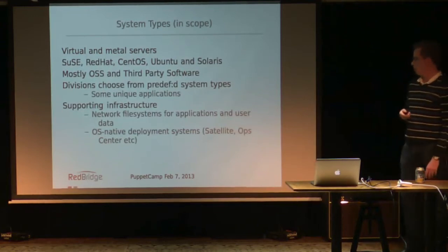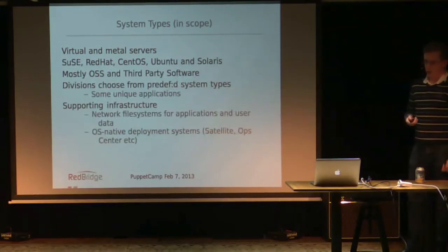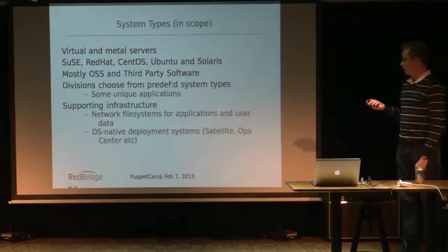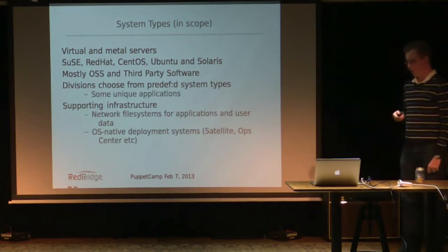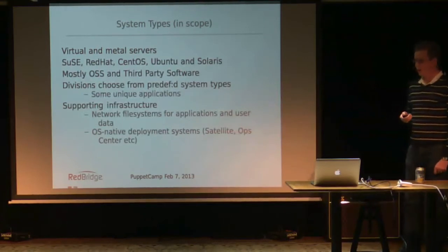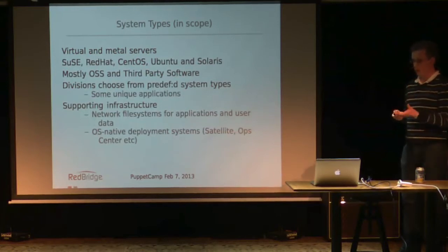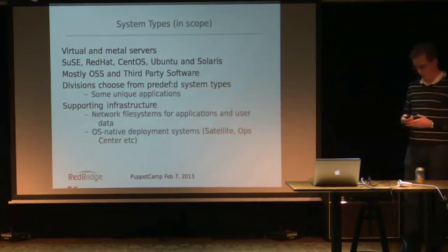For supporting all of this, apart from obviously Puppet, there is some supporting infrastructure as well. Since they have Red Hat, they have a few satellite installations. Same thing for Solaris — I think it's called Ops Center. And they also use, to avoid pushing every application onto every platform, a big network file system called AFS. So now you probably know which customer I'm talking about.